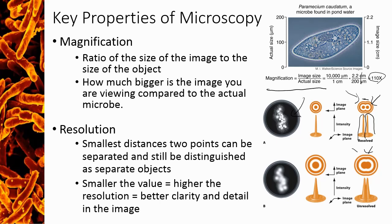However, if those two dots are closer together, so the distance between them is smaller than the resolution of the microscope, we can't tell that they are separate anymore, and that leads to a blurry image.